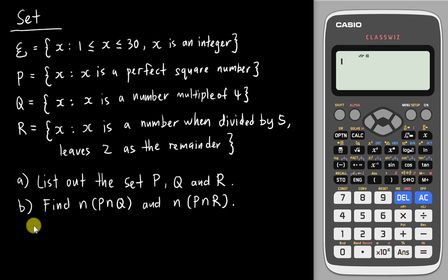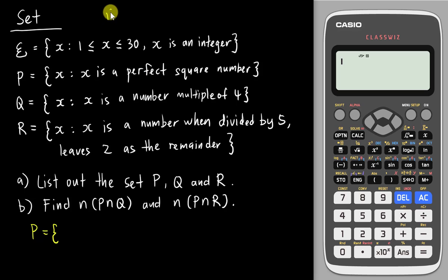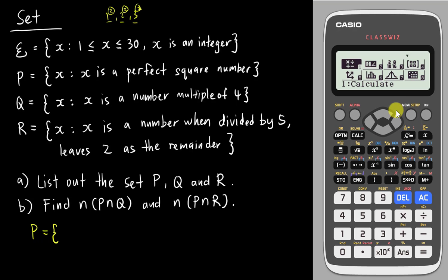To list out set P, I ask myself: what is the equation for perfect square numbers? Perfect square numbers are formed by 1 squared, 2 squared, 3 squared. The square is a constant, but the number 1, 2, 3 is a variable. So I go into the menu and look for Table, which is number 9, and press enter.